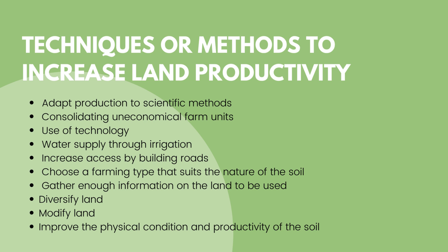Another method is consolidating uneconomical farm units. This will reduce management and running costs because separate farm units are more expensive to manage than when we combine them. Also, the use of technology — technology can be used to complete tasks in less time and with lower production costs. Crops watered by irrigation systems show higher production levels than crops that obtain water naturally from the water table, and the quality of irrigated crops is also better. So we need to provide water through irrigation.